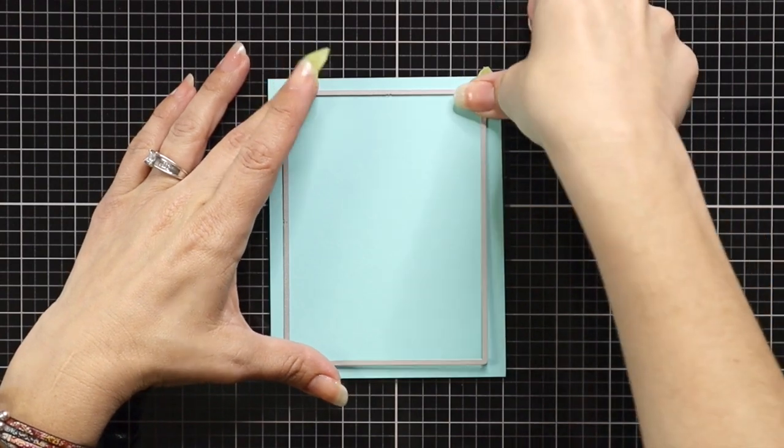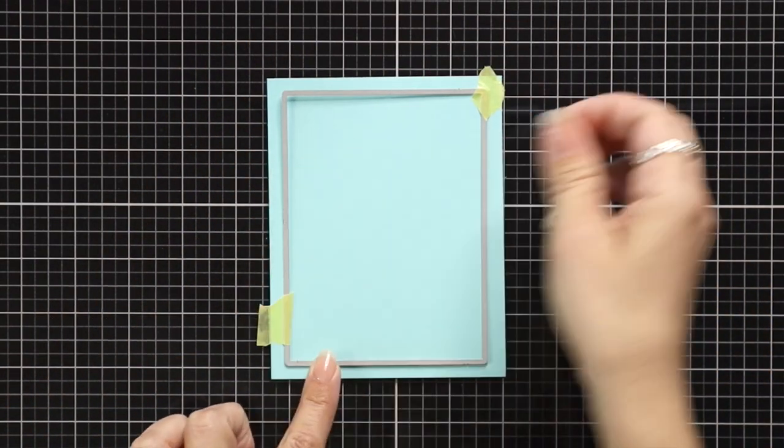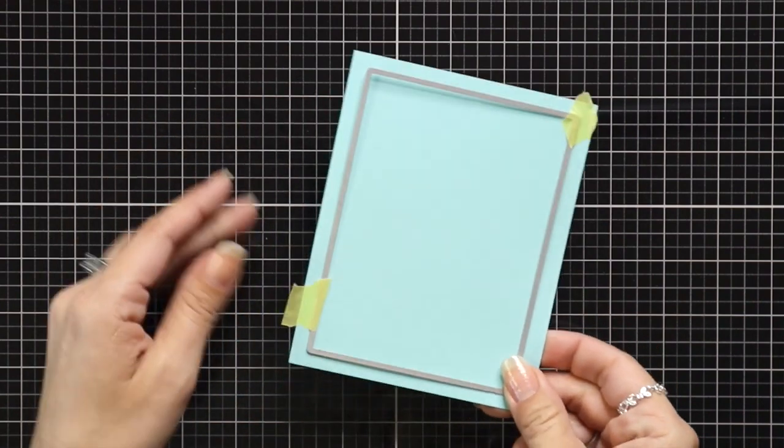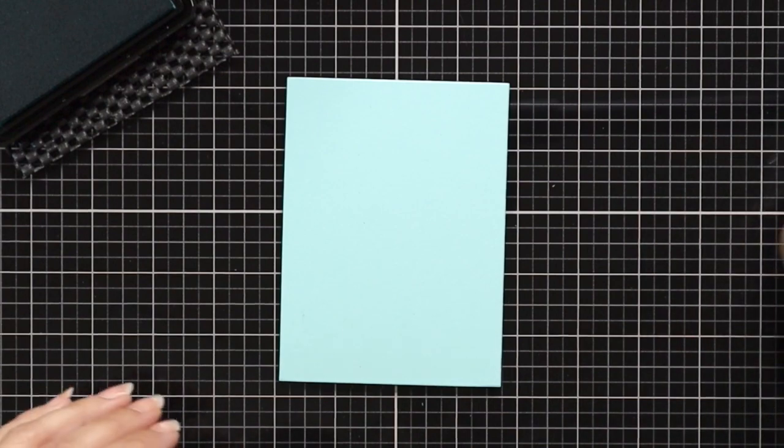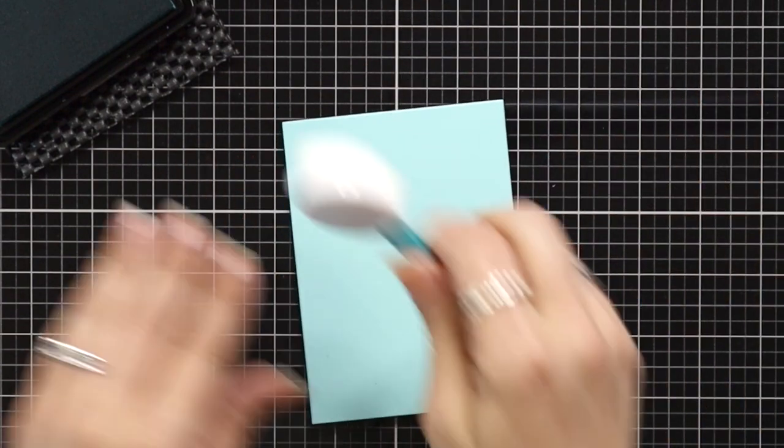So the first thing I want to do is I want to die cut out my Sea Glass cardstock. I'll be using one of the dies from the Master Layout 2 set. This way my cardstock is ready to the size that I'm going to use on my card front.